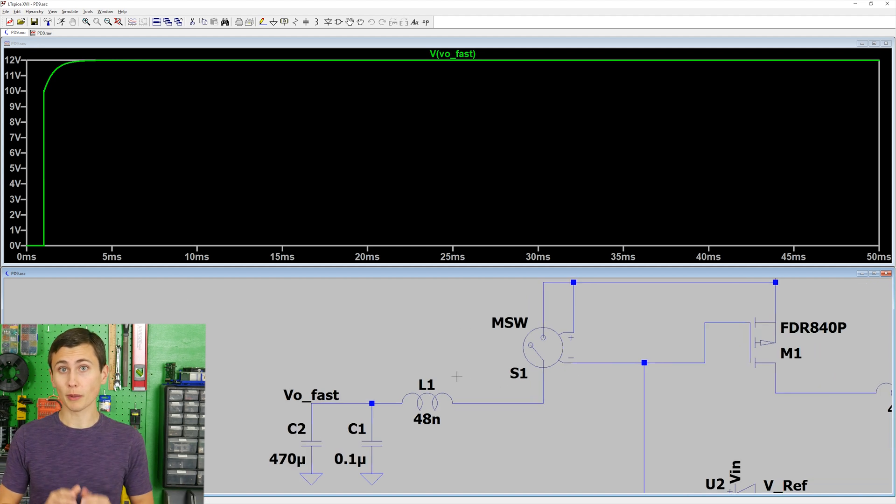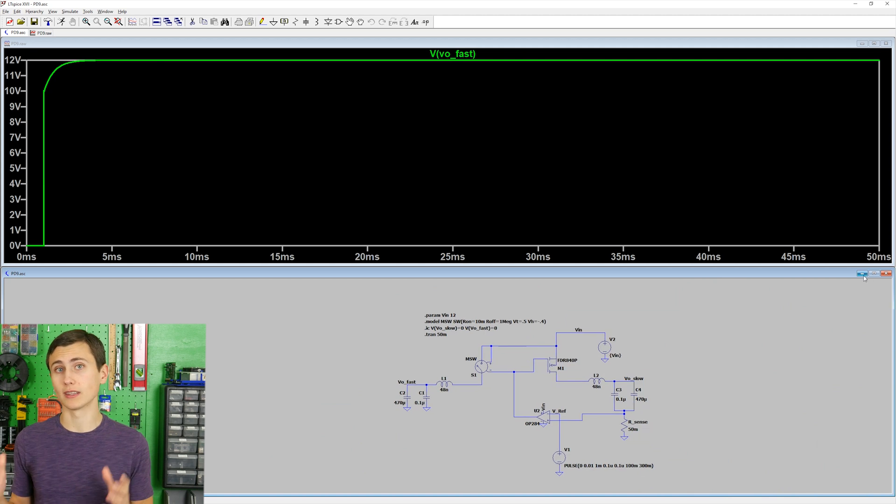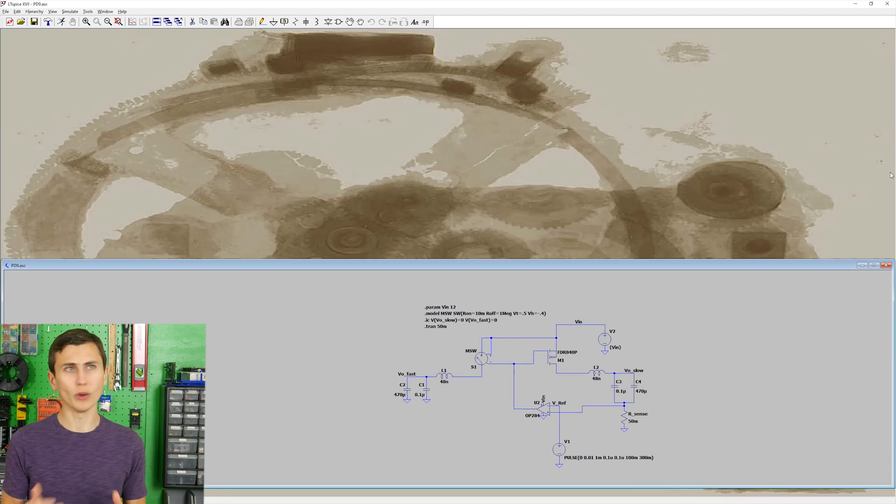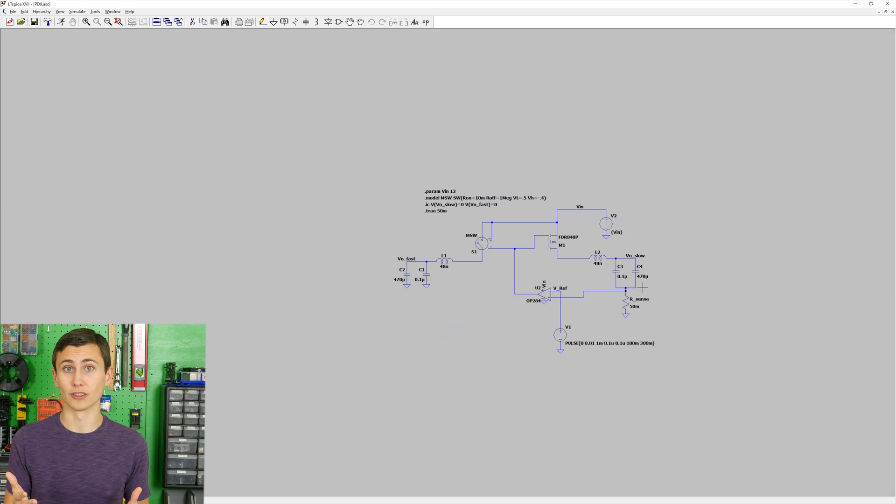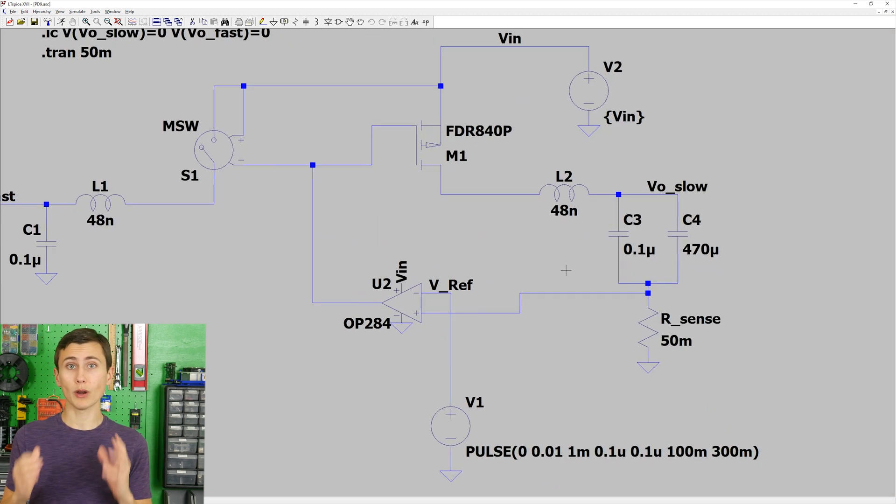Let's start by making sure that we understand the function of each component in this relatively complex circuit. What exactly is going on here? The circuit uses a FET, op-amp, reference voltage, and current sense shunt resistor.